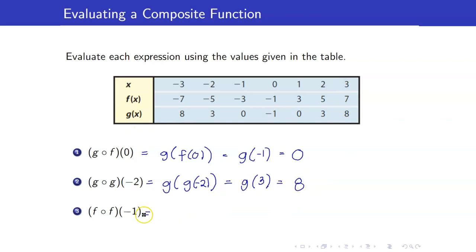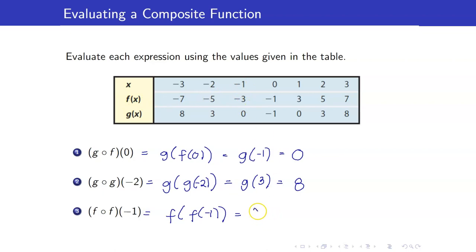Next, f circle f of negative 1. This is f of f of negative 1. From our row for f, f of negative 1is equal to negative 3.